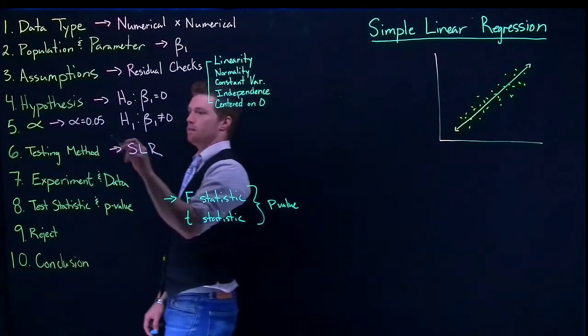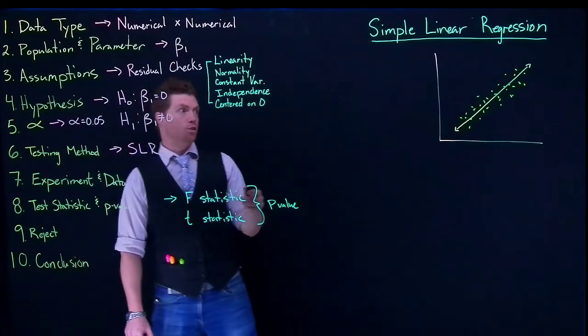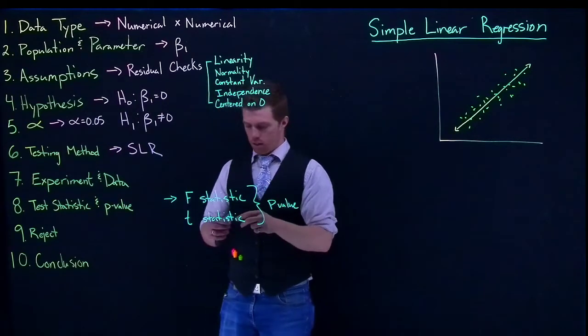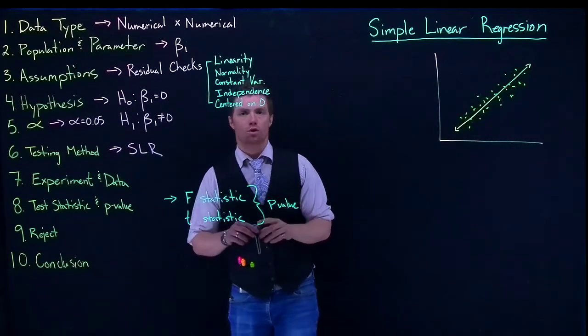If our p-value is less than our alpha, we then get to reject the null hypothesis. And then we're ready for our conclusion and kind of our post-hocs.